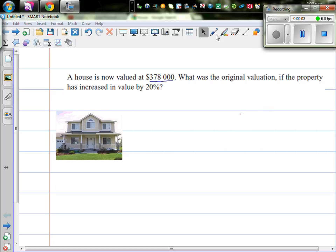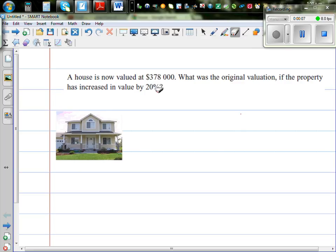Let's look at this question: the house is now valued at $378,000. What was the original valuation if the property has increased in value by 20%? Okay, so this is the present value. Let's write what is given.